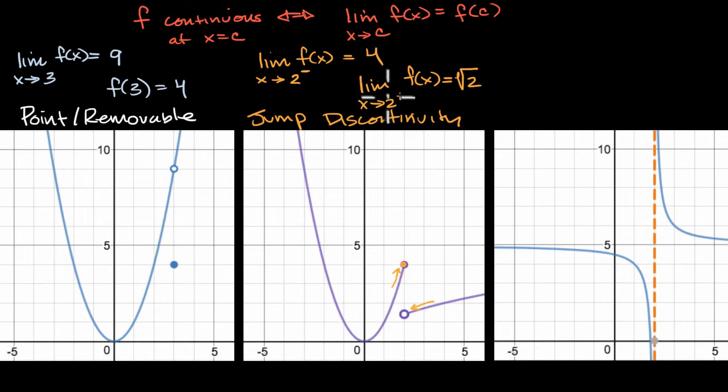So even though the one-sided limits exist, they're not approaching the same thing. So the two-sided limit doesn't exist. And if the two-sided limit doesn't exist, it for sure cannot be equal to the value of the function there, even if the function is defined. So that's why the jump discontinuity is failing this test. And once again, it's intuitive. You're seeing that, hey, I gotta jump. I gotta pick up my pencil. These two things are not connected to each other.